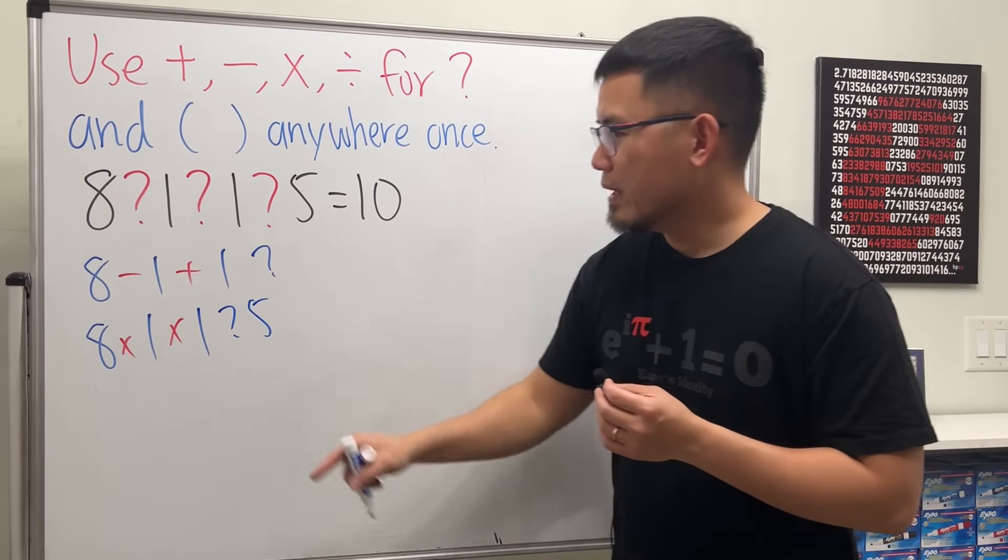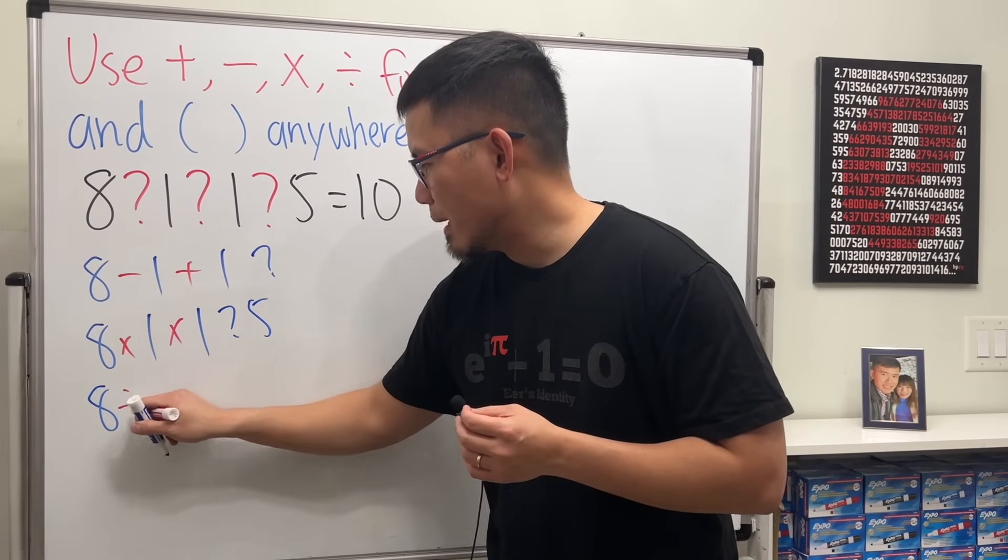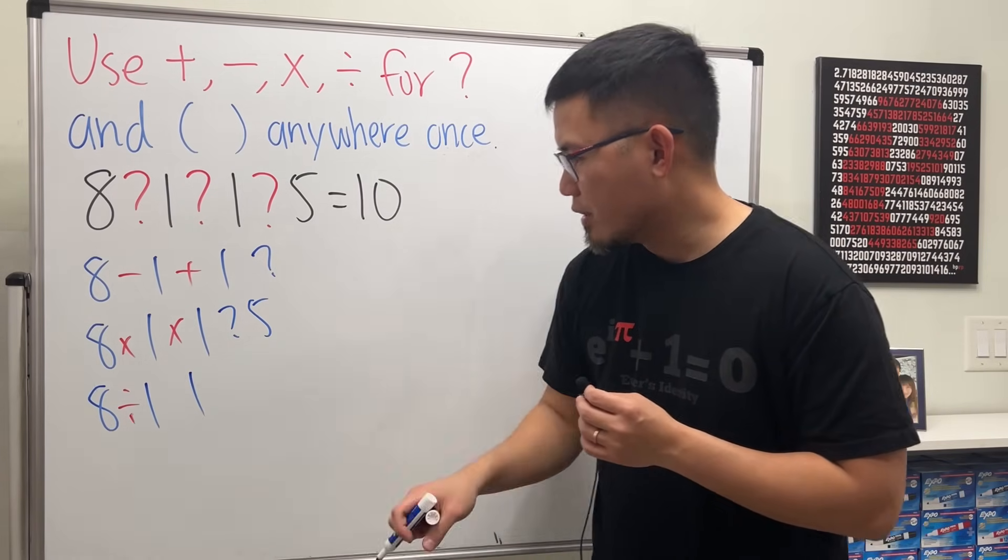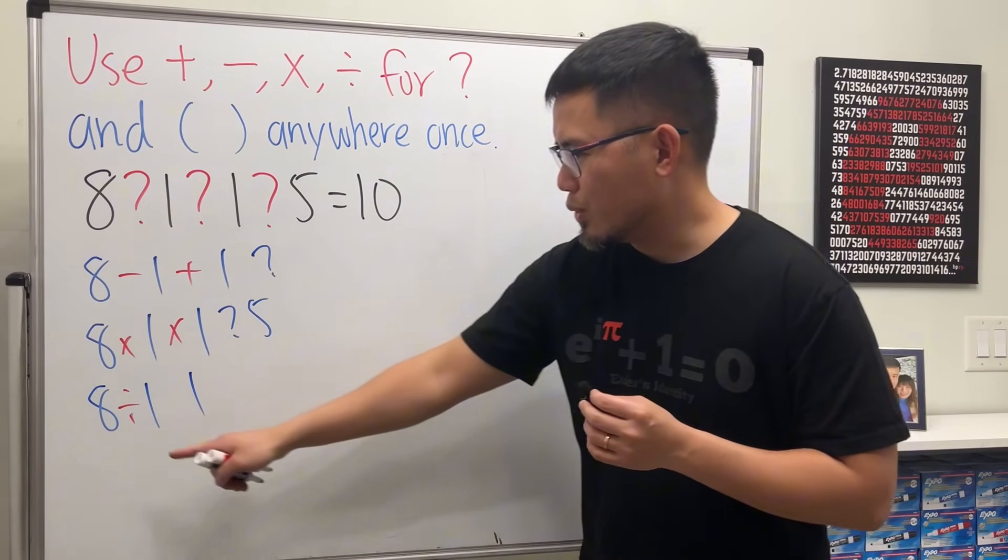And maybe we'll try division. If we do 8 divided by 1, that's a nice whole number. That's good. And then we have a 1 here. I want to reduce this a little bit.